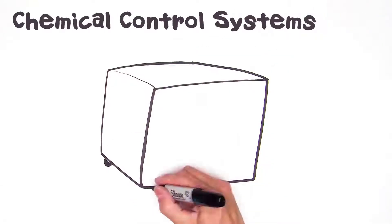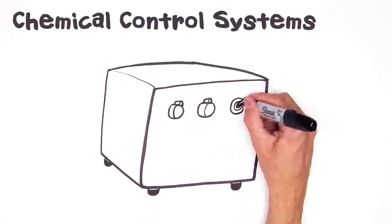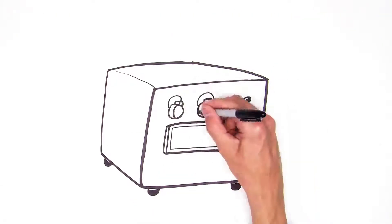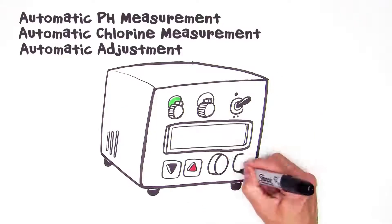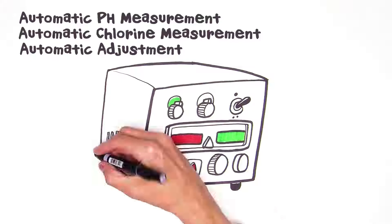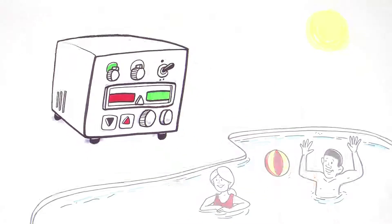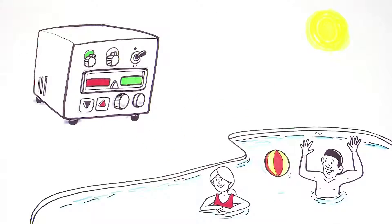Today, chemical control systems generally handle chlorine measurement and adjustment. These systems automatically measure pH and chlorine levels and adjust chlorine and pH levels as required by health code. This keeps your pool healthy, compliant, and free of nasty microorganisms.